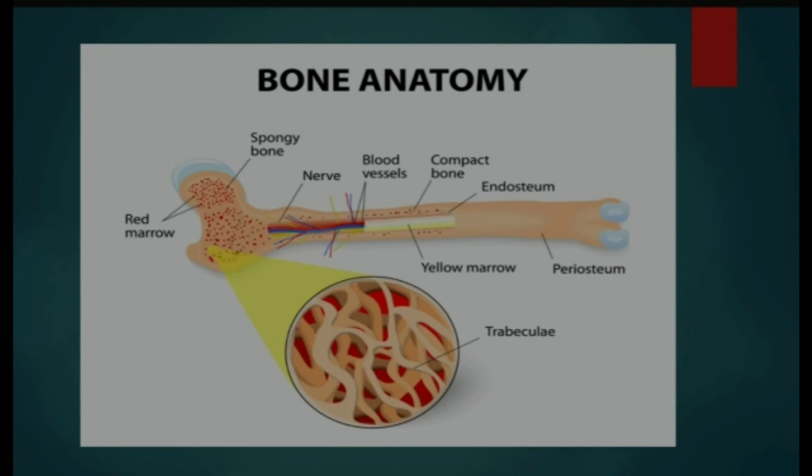Yeh slide jo humein show ho rahi hai wo bone ki anatomy dikhaa rahi hai, jismein red marrow, yellow marrow, spongy bone, bahut saare nerves, blood vessels, aur compact bone dikhaai de rahe hain.